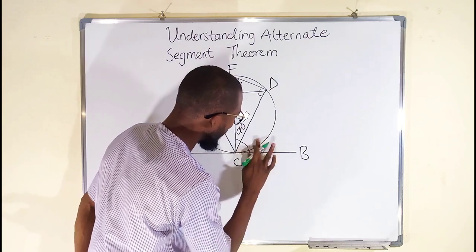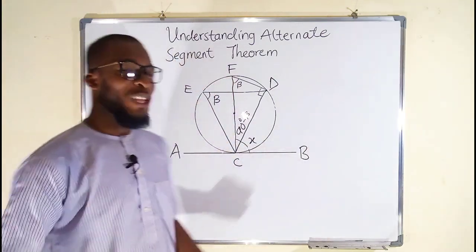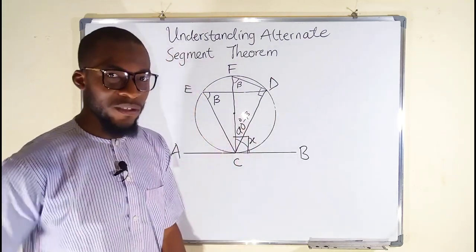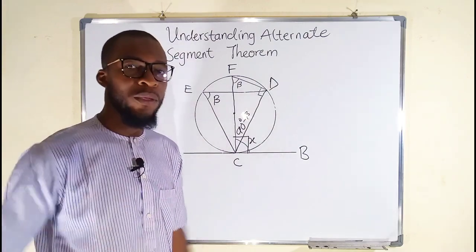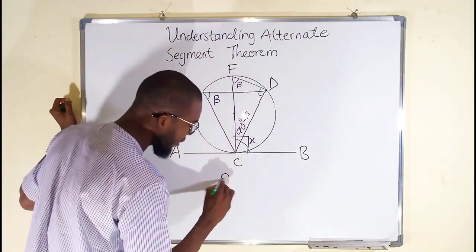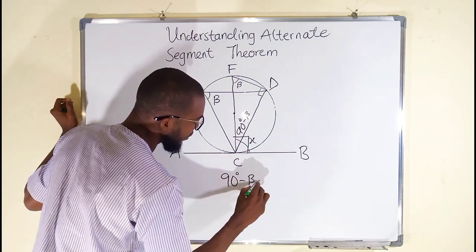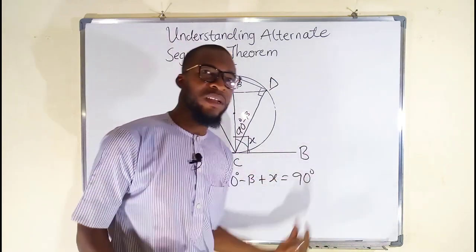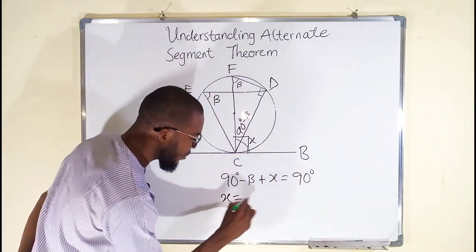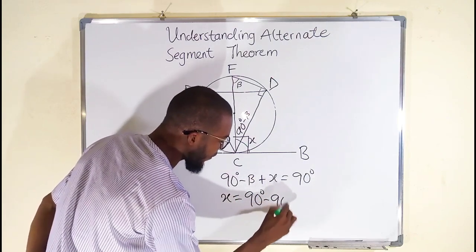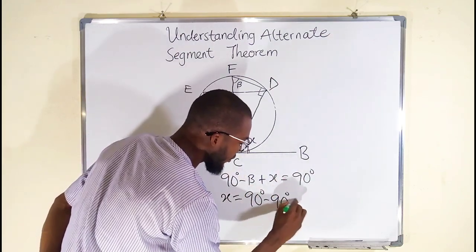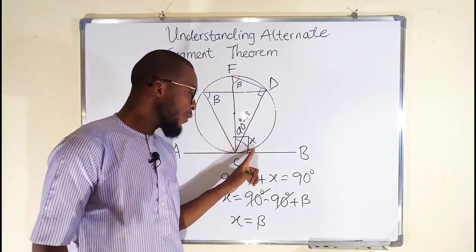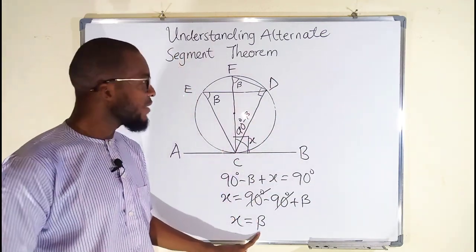This angle added to beta will give us 90 degrees, so this angle will be 90 degrees minus beta. Let's assume we don't know this angle — let's call it x. Remember that a radius and a tangent form a right angle, therefore this angle right here is 90 degrees. If you add x and (90 minus beta) you should obtain 90 degrees: 90 degrees minus beta plus x equals 90 degrees. Taking everything to the right and leaving only x, we get x equals 90 minus 90, and negative beta crosses over to become positive beta. So finally, x equals beta.